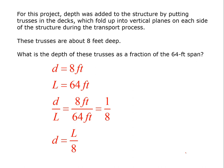So for this project, depth was added to the structure by putting the trusses in the decks, which fold up into vertical planes on each side of the structure during the transport process. The trusses are eight feet deep. So what is the depth of the trusses as a fraction of the 64 foot span? So we have depth of eight feet, length of 64. D over L is eight over 64 or one over eight. And when we transpose L up there, we get d is equal to L over eight.